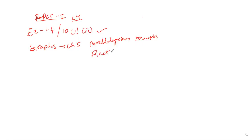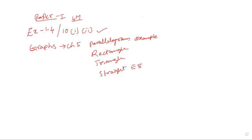Then the rectangle is a form. Then the area of a triangle. Then the triangle. Some of the two coordinates form a straight line. Straight line — this is exercise 5.3. In this case, there are straight line questions. Some of the two coordinates should be 5.